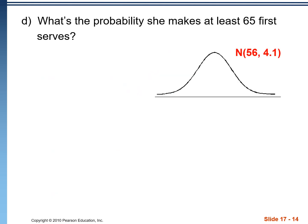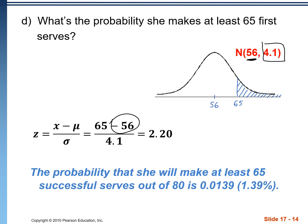Lastly, what's the probability she makes at least 65 first serves? So at this point, we know our normal model has a mean of 56. It has a standard deviation of 4.1. We want to find the probability that she makes 65 or more first serves. Simple Z-score problem. Always subtract the mean from our data value. We get a Z-score of 2.20. Jump to our calculator, normal CDF. And there's a 1.39 chance that she'll make 65 or more.